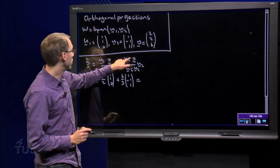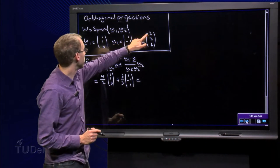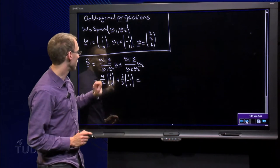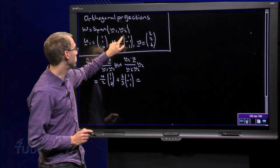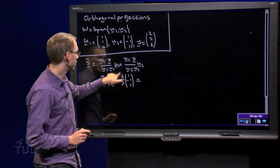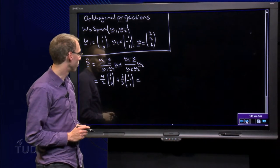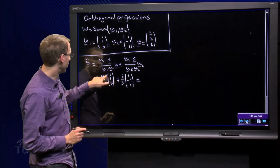And then u2 dot y: 2 minus 2 plus 6 equals 6, over u2 dot u2, which is 1 plus 1 plus 1 equals 3, times u2, which is [1, -1, 1]. So we have 2 there.